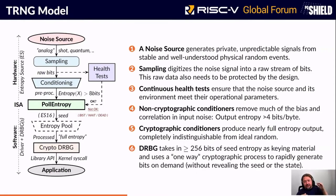This is the delineation of the different components as defined in the standards. We need to be able to map different parts of our implementation into noise source, sampling, continuous health checks, and so on, in order to meet standard requirements. There is a clear mapping between our design and SP 800-90B.